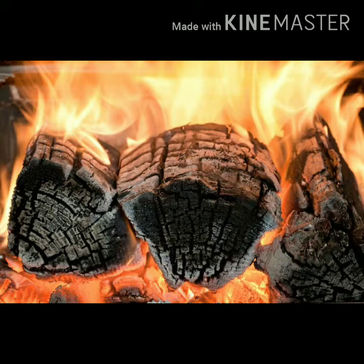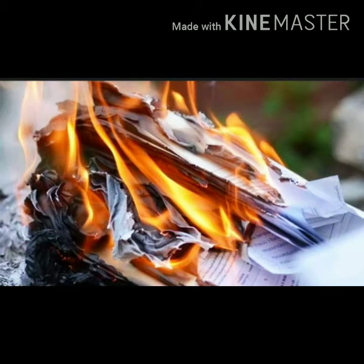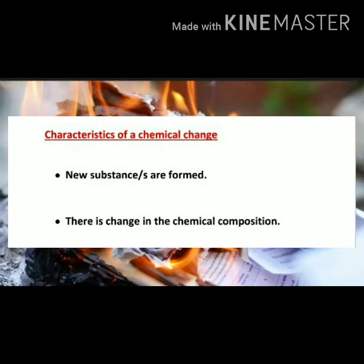Now besides the formation of new substances, you will also see that ash, carbon dioxide, and water vapour formed during burning have a different chemical composition than the substance you had taken. Paper is made up of something else — its chemical composition is something else — but ash, carbon dioxide, and water vapour have a different chemical composition. So in a chemical change: number one, a new substance is formed; number two, there is a change in the chemical composition.